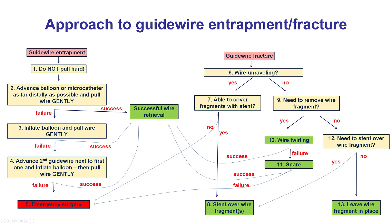When it comes to guidewire fracture, the key question is whether wire unraveling has occurred. Guidewires often have small coils at the tip, and if they unravel, there can be a lot of material in the coronary artery or in the aorta that requires removal. If the guidewire is not unraveled, the question is whether the wire fragment needs to be removed — sometimes a small distal fragment may be left in place, or a longer one still entirely in the coronary can be retrieved or stented over.